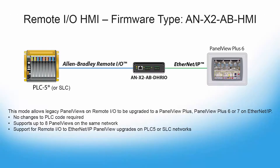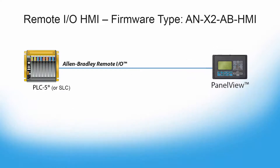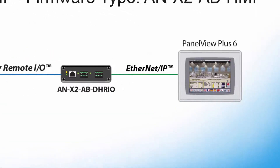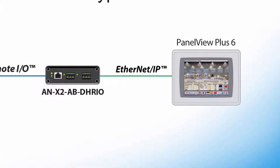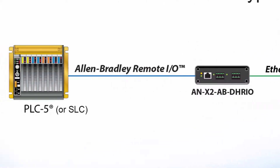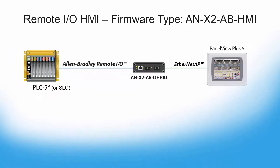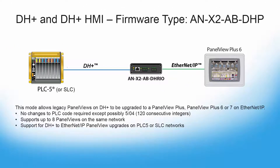Next we have the ANX2AB HMI. This is another mode intended for just one thing: upgrading RIO panel views to Panel View Plus 6 or 7 on Ethernet IP, allowing you to add the latest panel view HMIs to your RIO network. This should only be used for situations where you're integrating HMIs over Ethernet IP to a RIO network. If you want to add HMIs to a Data Highway Plus network, you would need to use the next firmware on our list.